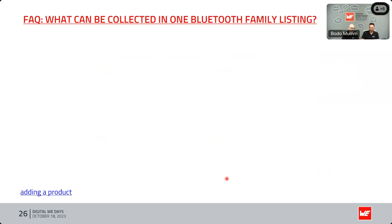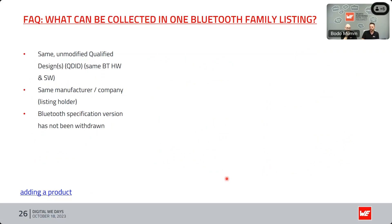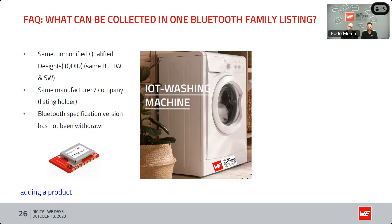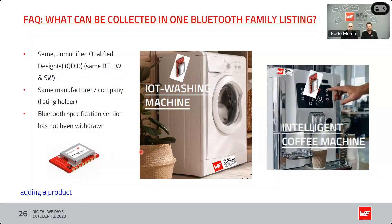Is it possible to use one declaration for several items or applications — a complete product family? Yes — you can list an entire product family under one listing ID. For example, if you use the same unmodified qualified design, the same manufacturer and listing holder, and the Bluetooth specification version has not been withdrawn, you can use it in both a washing machine and a coffee machine under the same Bluetooth listing ID.